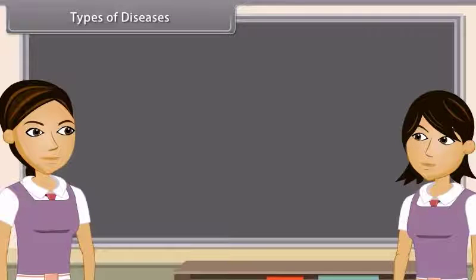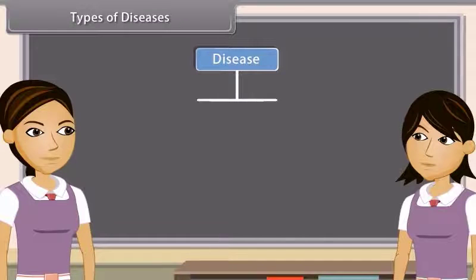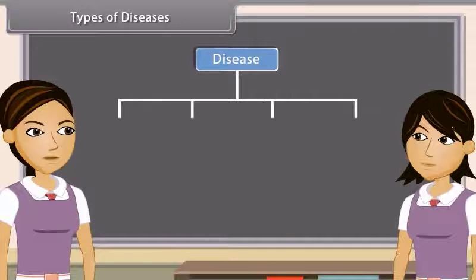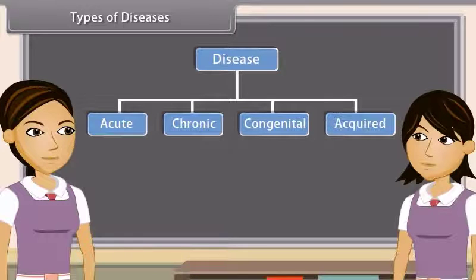Types of Diseases: Can you tell me how many types of diseases are there? Yes, human diseases are grouped into four categories: acute, chronic, congenital and acquired.